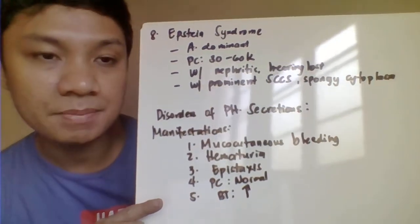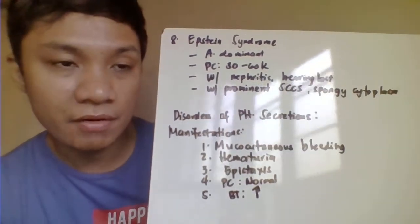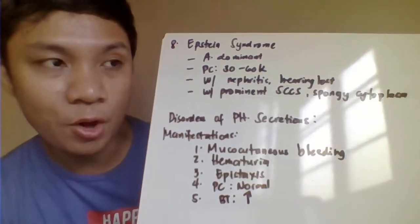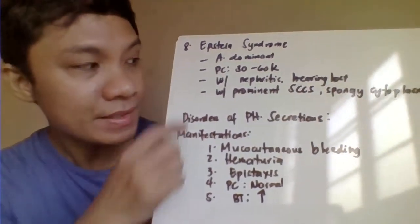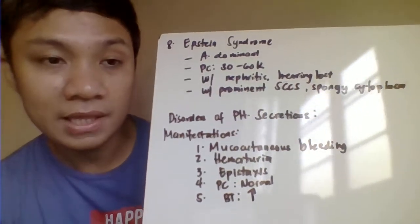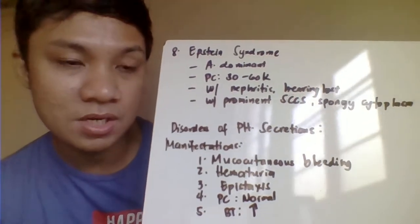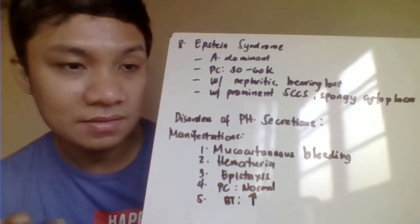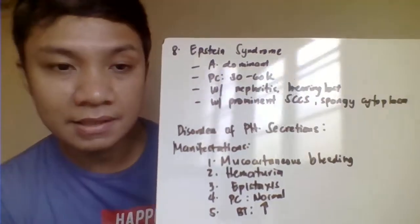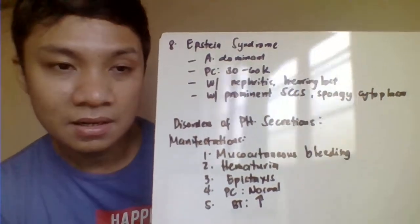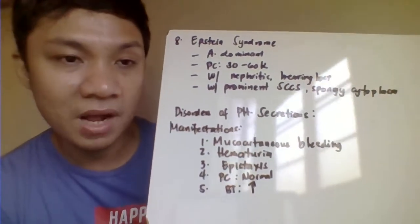Epstein syndrome is characterized by giant platelets and thrombocytopenia, inherited as autosomal dominant with a platelet count of 30 to 60,000. It resembles Fechner's syndrome but without the eye manifestation — no glaucoma, no cataract formation. However, it does have hearing defects and kidney problems. It is also characterized by a very prominent surface-connected canalicular system, and the platelets appear to have a spongy cytoplasm.